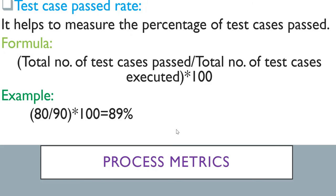Next is test case pass rate. After you execute the test cases, it's time to know your pass rate. It helps to measure the percentage of test cases passed. The formula is: total number of test cases passed divided by total number of test cases executed, multiplied by 100. For example, if 80 test cases passed out of 90 executed, your pass rate is 89%.